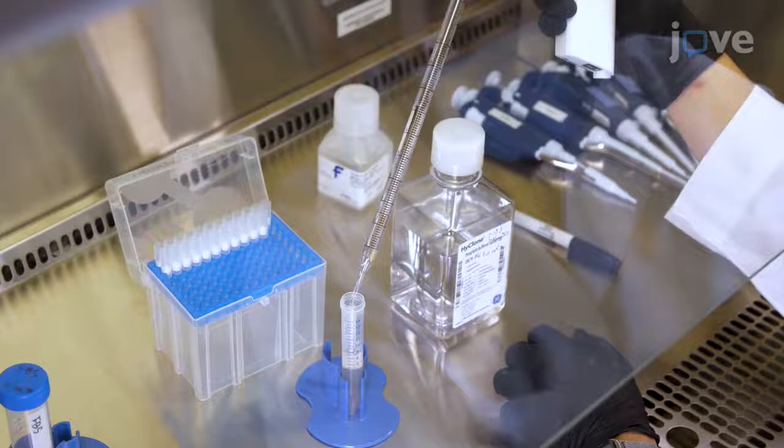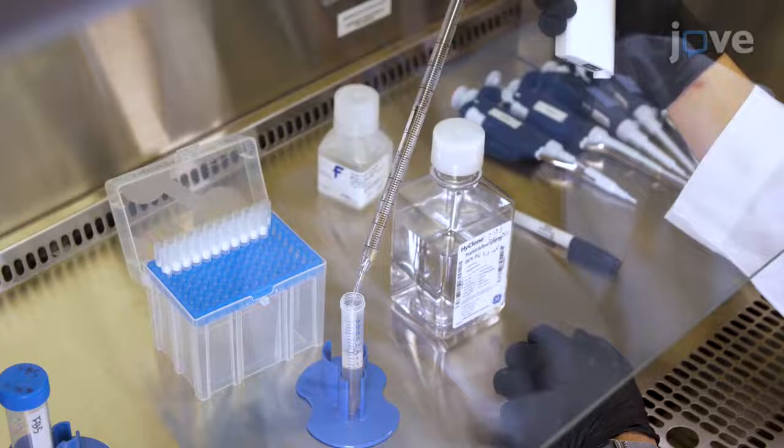Bring the volume to 15 milliliters with sterile PBS. Then cap the tube and invert it gently 2 to 3 times.